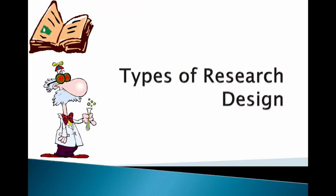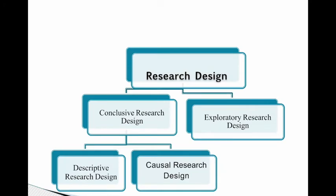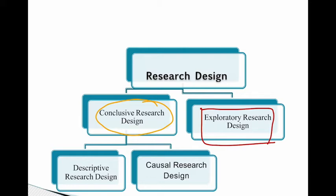Now let's start understanding the types of research design. As you can see in this diagram, the main types of research design are classified into two categories: one is conclusive research design and the other is exploratory. There are many books that give a variety of research designs, but in this video I have focused on those that are frequently used and easy to understand. Research design is majorly classified into conclusive and exploratory, and within conclusive there are two further categories: descriptive research design and causal research design.